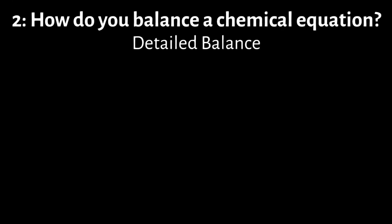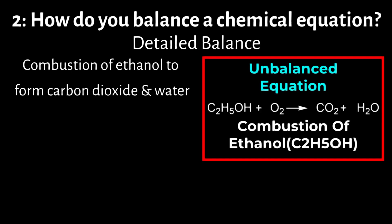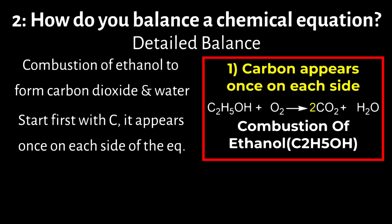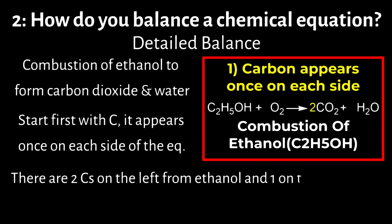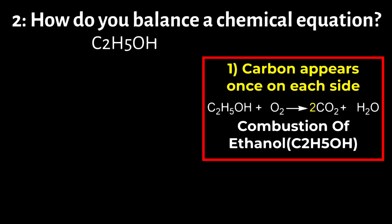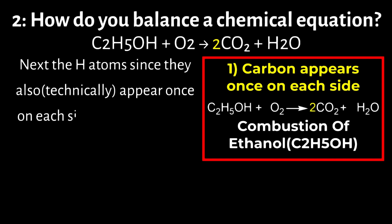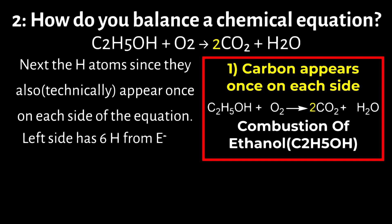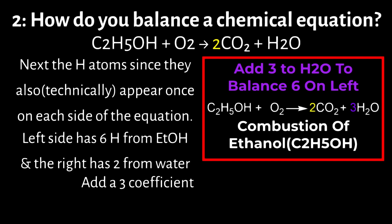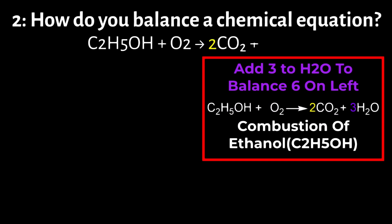Let's do a detailed balance of the chemical equation for the combustion of ethanol C2H5OH to form carbon dioxide CO2 and water H2O. The unbalanced equation is: C2H5OH + O2 → CO2 + H2O. Start with carbon: there are two carbons on the left from ethanol and one on the right from carbon dioxide, so add a coefficient of 2 in front of CO2 to get C2H5OH + O2 → 2CO2 + H2O. Next, balance hydrogen: the left side has six hydrogens from ethanol and the right has two from water, so add a coefficient of 3 in front of H2O to get C2H5OH + O2 → 2CO2 + 3H2O.